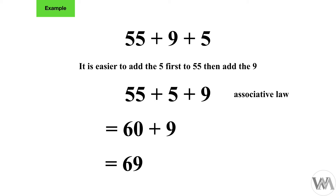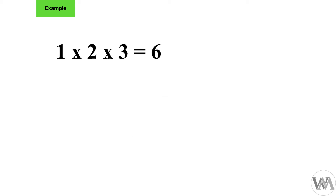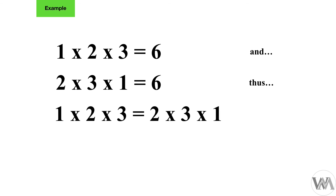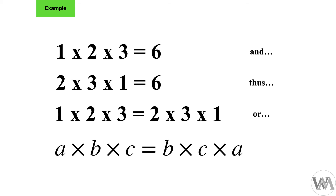Instead of going 55 plus nine is 64, plus five is 69 — it takes a little bit longer than just swapping the numbers to see what adds up or multiplies more easily. The same applies to multiplication: one times two times three gives six, and swapping numbers around to two times three times one also gives six. So one times two times three equals two times three times one, or a times b times c equals b times c times a — the order doesn't matter.